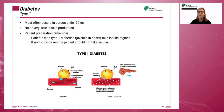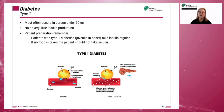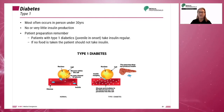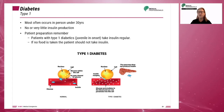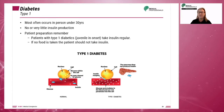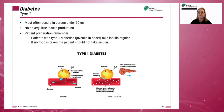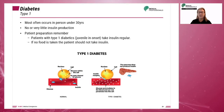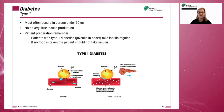Type 1 diabetes most often occurs in persons under 30 years old. In this condition, the body produces very little or no insulin. Patients with type 1 diabetes, also called juvenile onset diabetes, take insulin regularly. In terms of diagnostic preparation, if no food is taken, the patient should not take insulin.